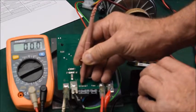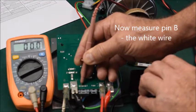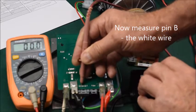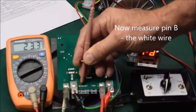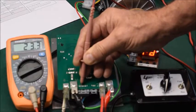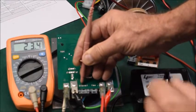Now move the meter lead to pin B which corresponds to the white wire. This should be zero with the ignition switch off and the same as your battery voltage with the ignition on. Write the values in the box on the sheet.